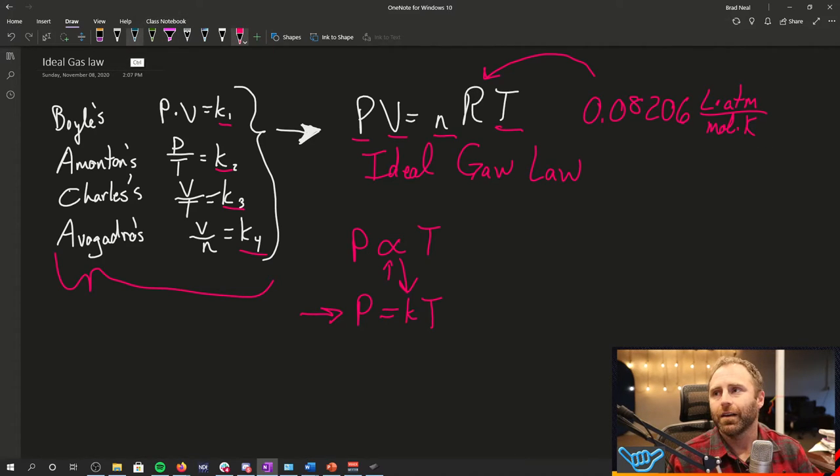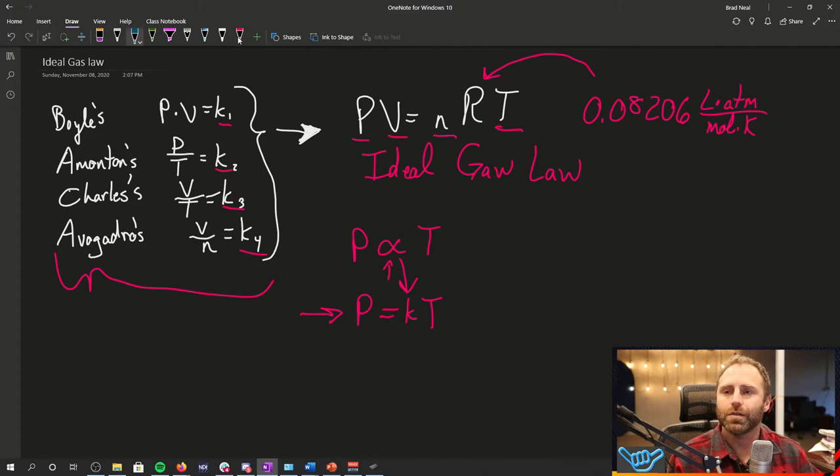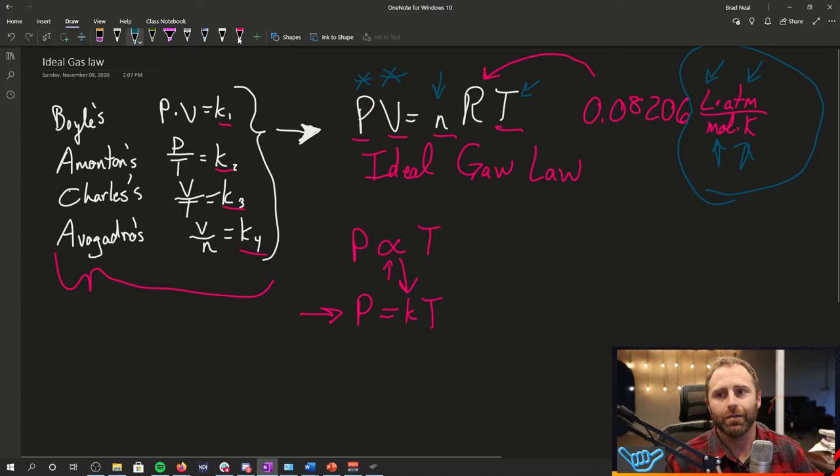The units are there such that if we do a little bit of fancy math, the liters and the atmospheres here in the numerator are going to cancel out any values that we put in for our pressure and our volume. The moles and the Kelvin right here are going to cancel out units for our moles and our temperature. So this is telling us for the ideal gas law equation, we need to be using these units right here for our pressure. So atm is our pressure, liters for our volume, moles for N because N is moles, and temperature needs to be in Kelvin.